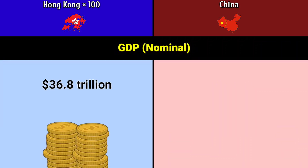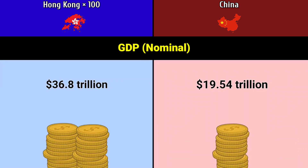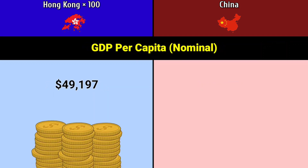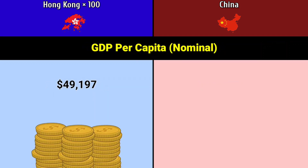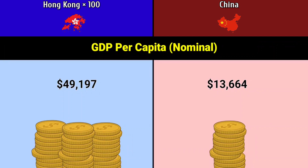GDP nominal: Hong Kong 36.8 trillion dollars, China 19.54 trillion dollars. GDP per capita: Hong Kong 49,197 dollars, China 13,664 dollars.